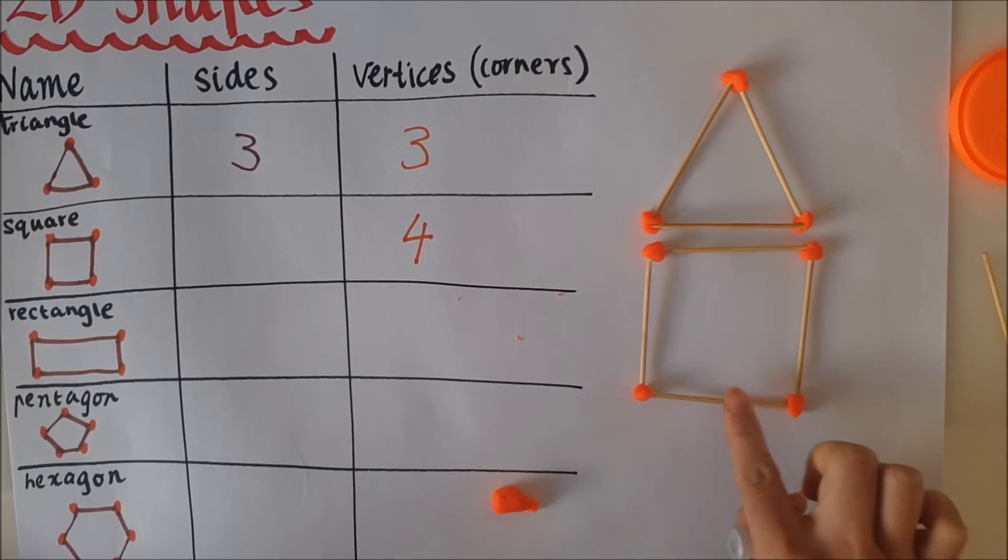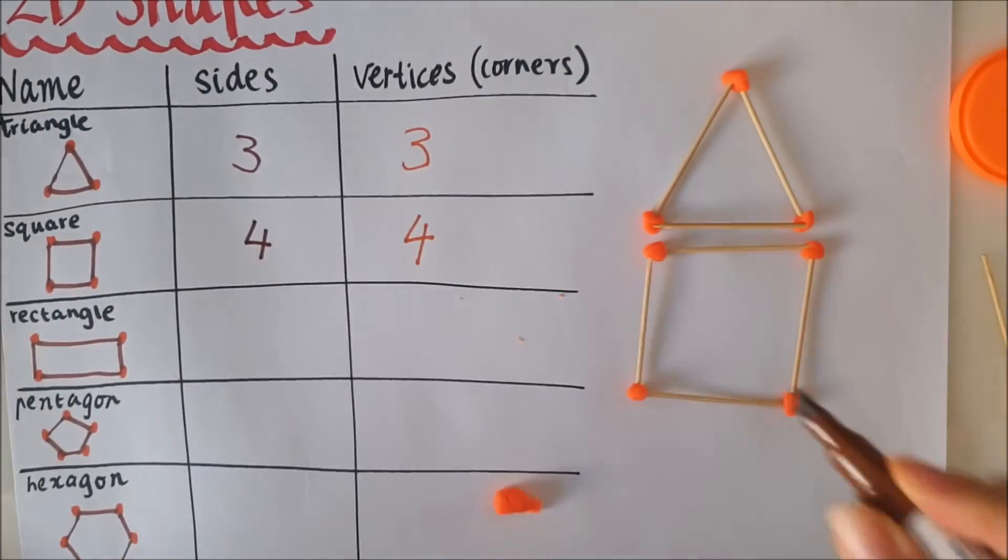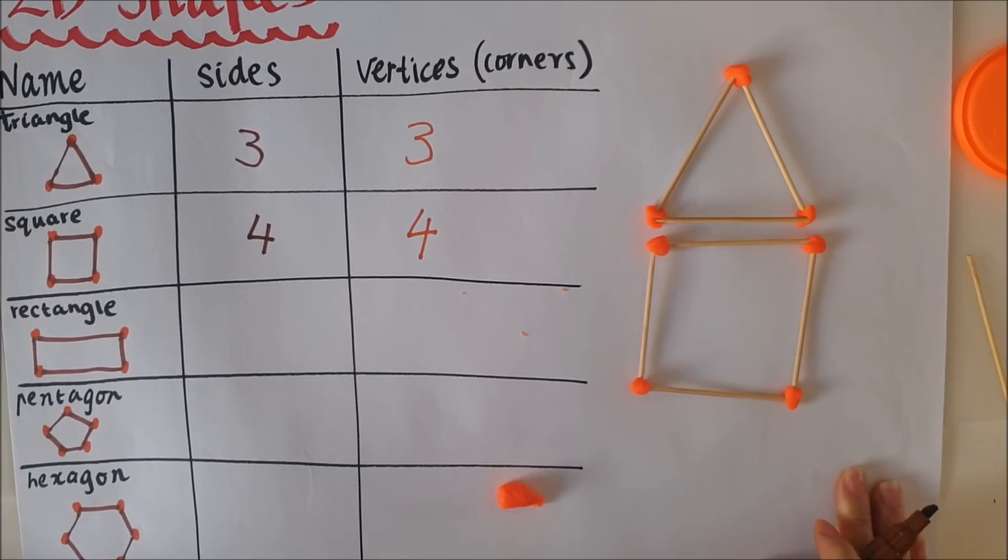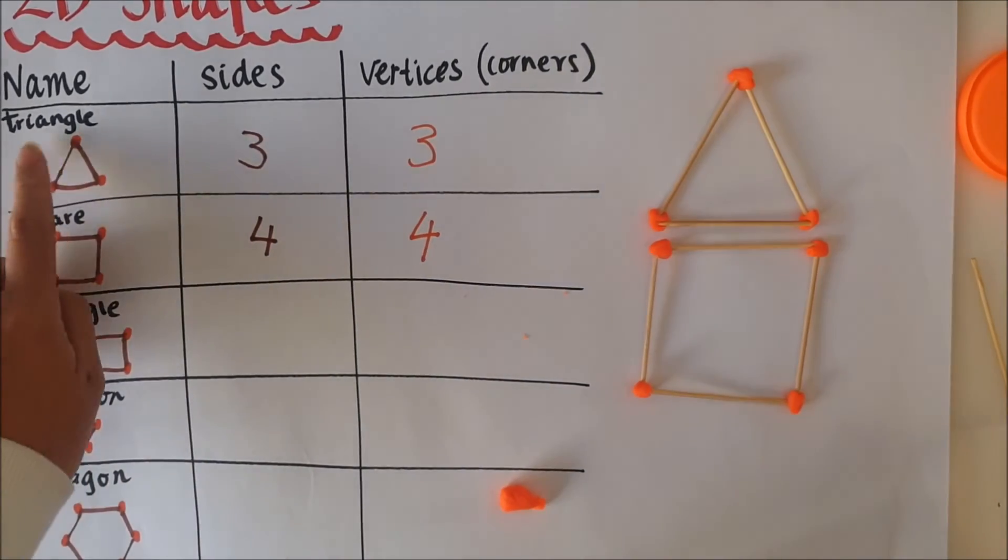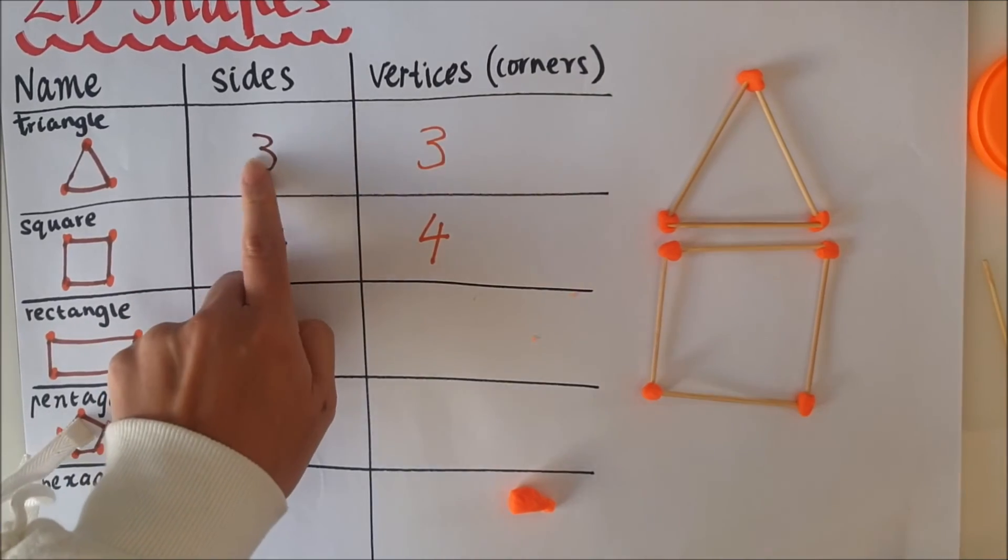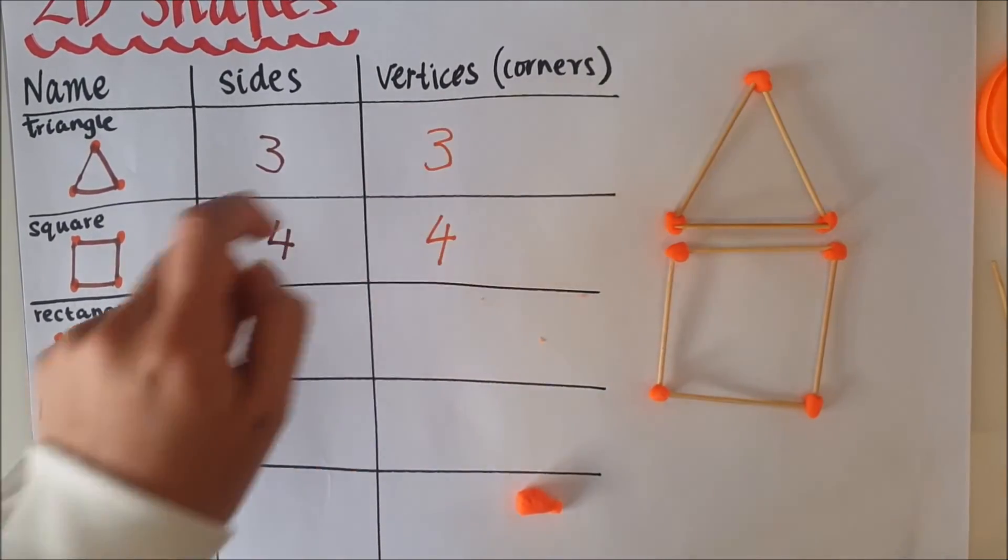One, two, three, four. And there you go. I've made my model and I've also drawn my picture and I've labeled the amounts of sides and vertices.